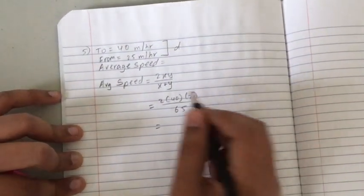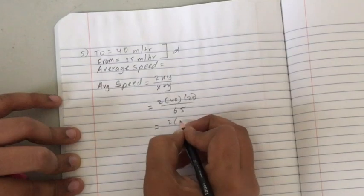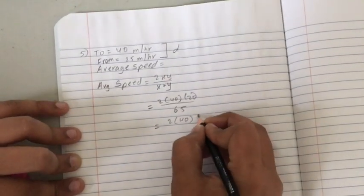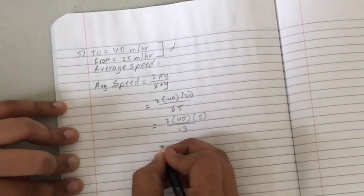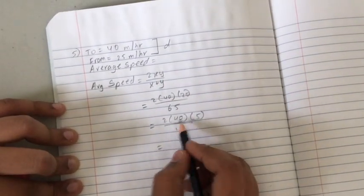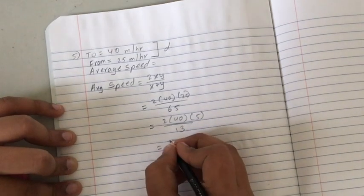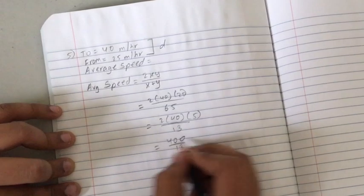So, we can simplify this even more. 5 and 13. Let's multiply. 2 times 40 is 80. 80 times 5 is 400 by 13. We can simplify this even more.